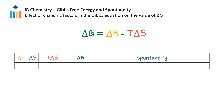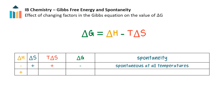For an exothermic process, delta H is negative. If the entropy of the system increases, delta S is positive and so T∆S is also positive. This will result in a negative value for delta G at all temperatures, and so all exothermic reactions that have an increase in entropy are spontaneous at all temperatures. Oppositely, endothermic reactions have a positive delta H value. And if there is a decrease in the entropy of the system, then the value of delta G is positive and all such reactions are non-spontaneous at all temperatures.